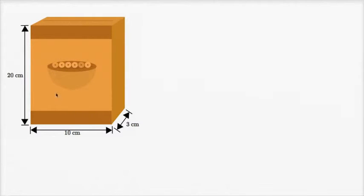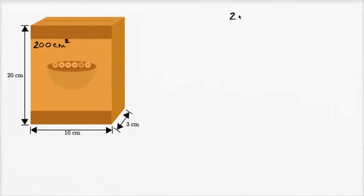The front of the box is 20 centimeters tall and 10 centimeters wide. It's a rectangle, so to figure out its area we multiply 20 centimeters times 10 centimeters, giving us 200 square centimeters — that's the area of the front. There's another side with the exact same area, the back of the box, so that's another 200 square centimeters.